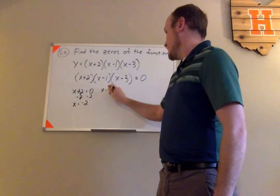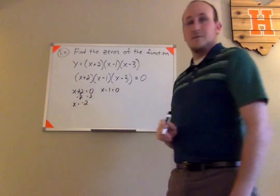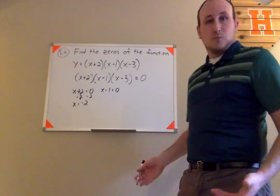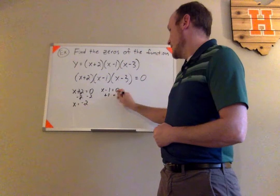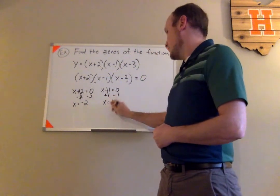Set the next factor equal to zero. So I have x minus 1 equals zero. Again, you may look at that and say, oh, I know it's 1. But showing the algebra behind that, I'm going to add 1 to both sides. That would cancel. And you'll have x equals 1.